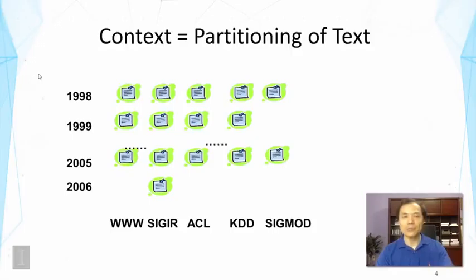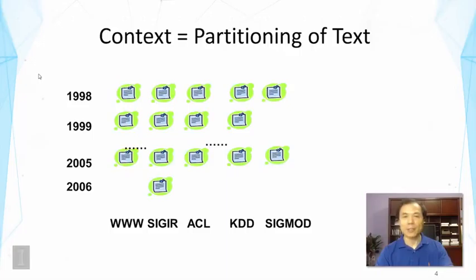So what's the use — why is text context useful? Context can be used to partition text data in many interesting ways, allowing us to partition text data in almost arbitrary ways as we need. This is very important because it allows us to do interesting comparative analysis. It also in general provides meaning to the discovered topics if we can associate the text with context.